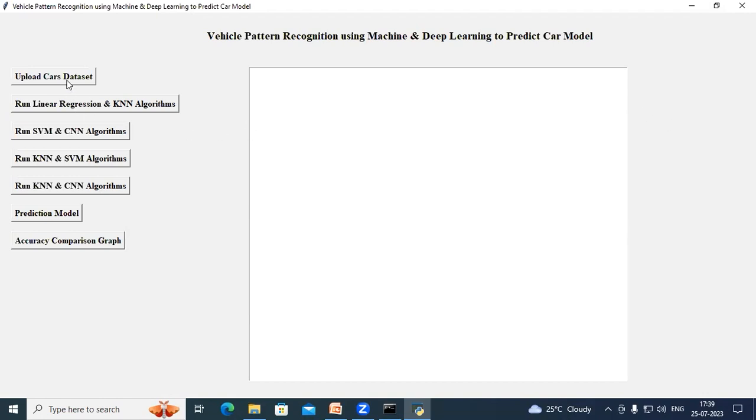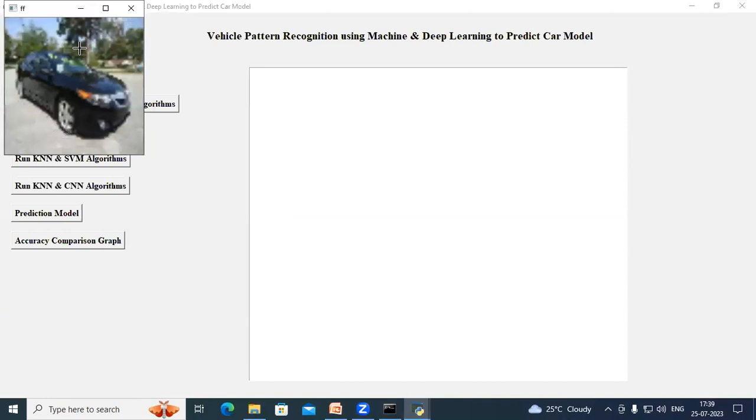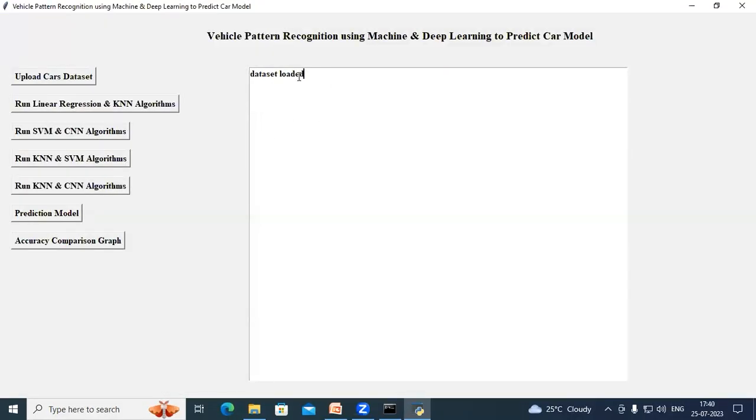Now click on upload cars dataset button. A dialog box will be open. Select the dataset and click on select folder. This is a sample image from the dataset. Close this image and in the text box, we can see that dataset is loaded.